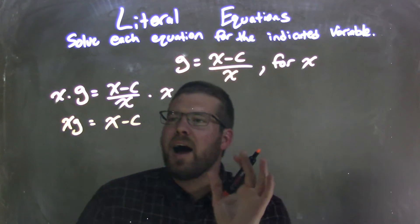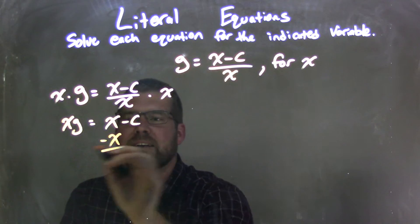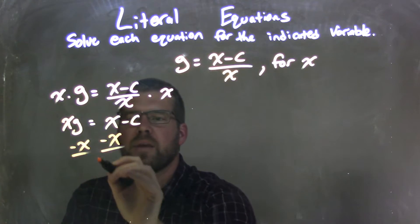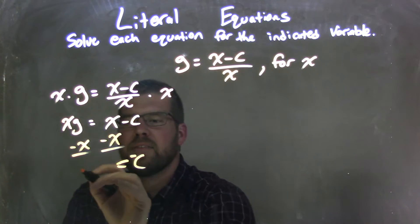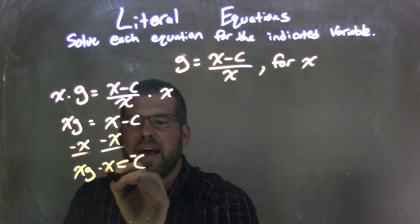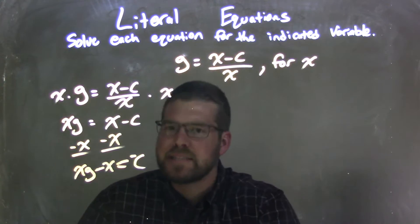Now I need to bring all the x's over to one side, so I'm going to subtract x from both sides. I'm going to write my equal side here. What that gives me is I'm left with xg minus x equals negative c.